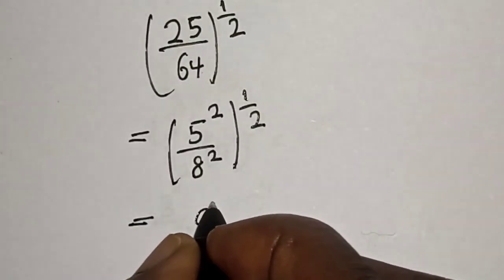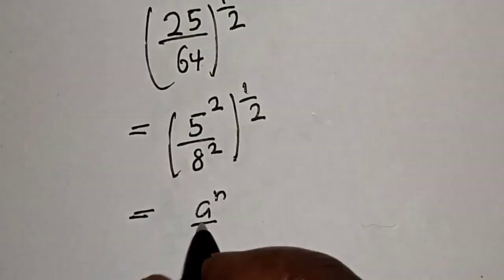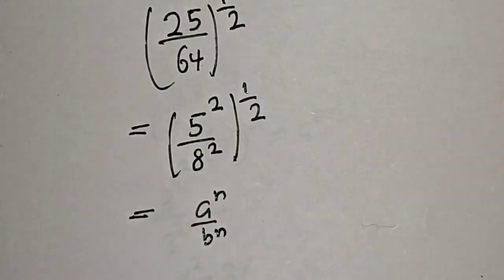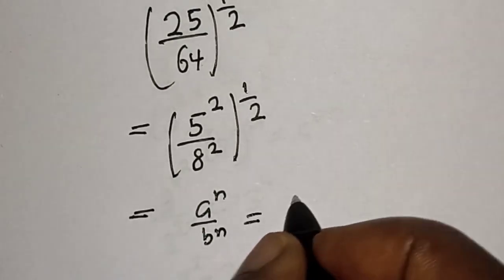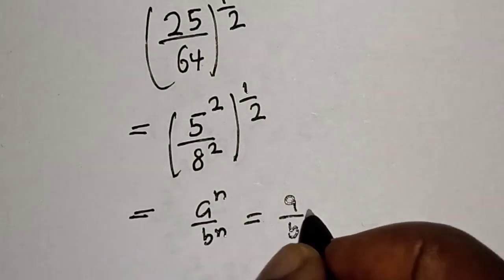a raised to power n over b raised to power n is equal to (a/b) to the power of n.